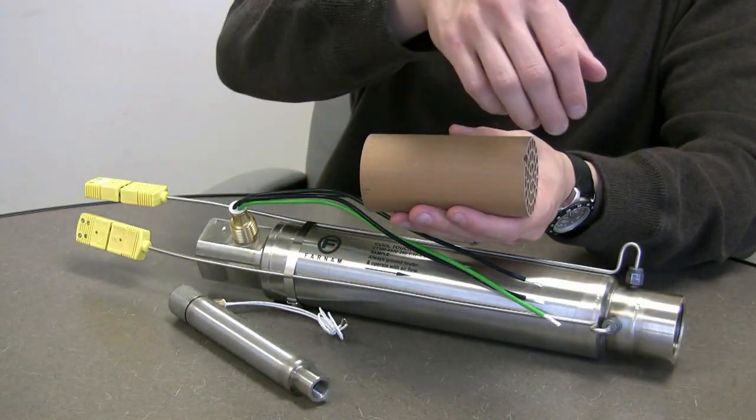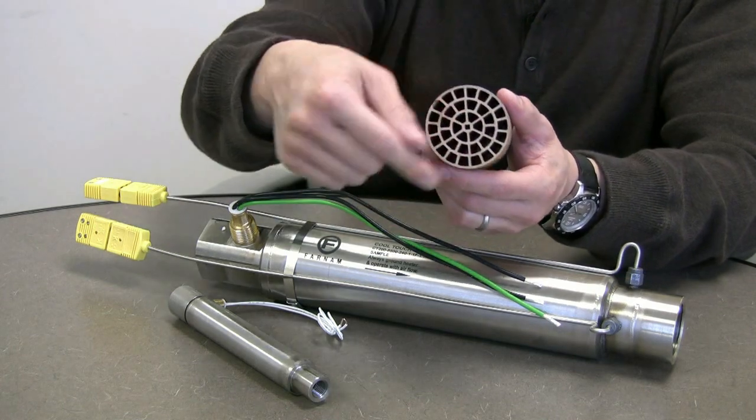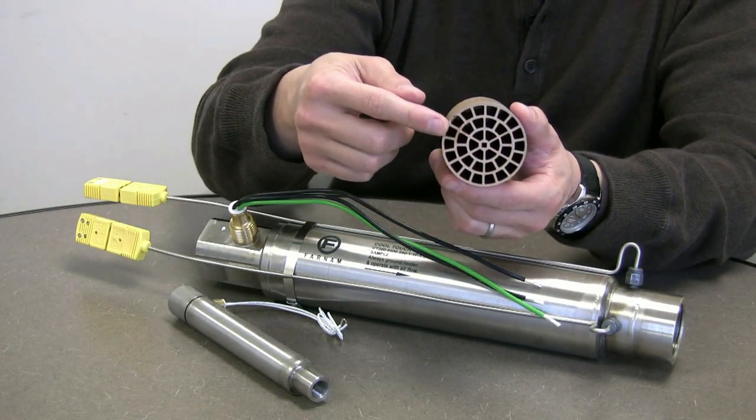The core of the heater is a ceramic core, just like the heat torch, in which the nichrome resistance wire is wound throughout.